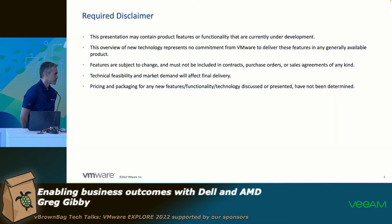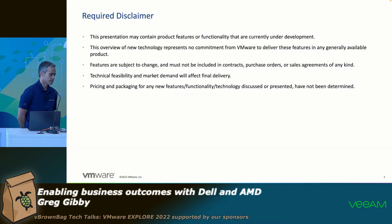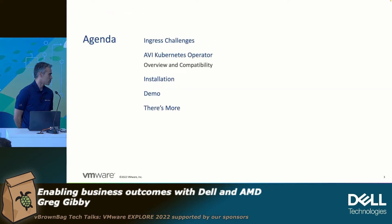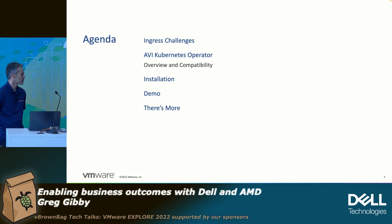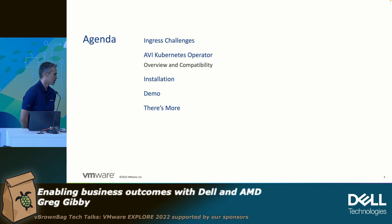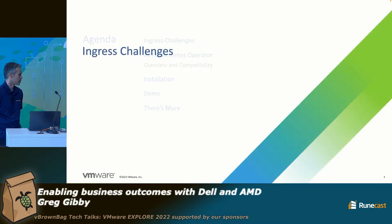So this is a disclaimer, although there are no roadmap items here. This is our agenda: we'll talk about the challenges we have today with ingress, how Avi — which is NSX Advanced Load Balancer — how it works, how you install it, and a short demo.